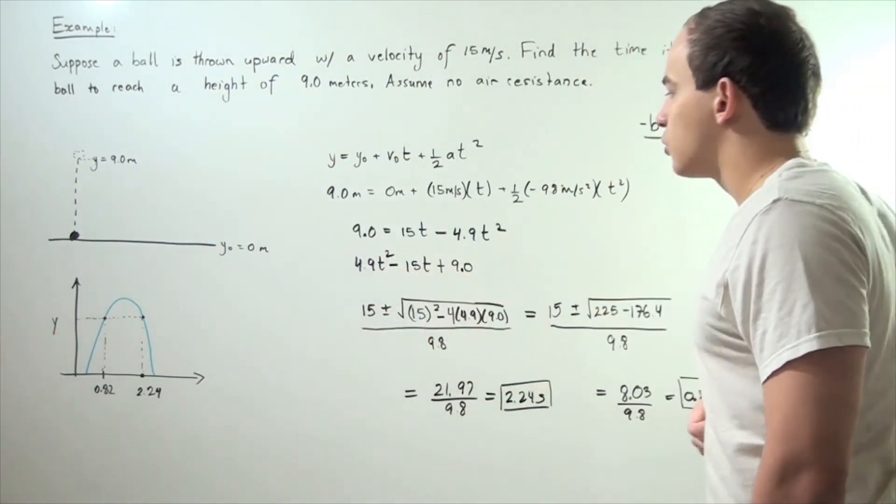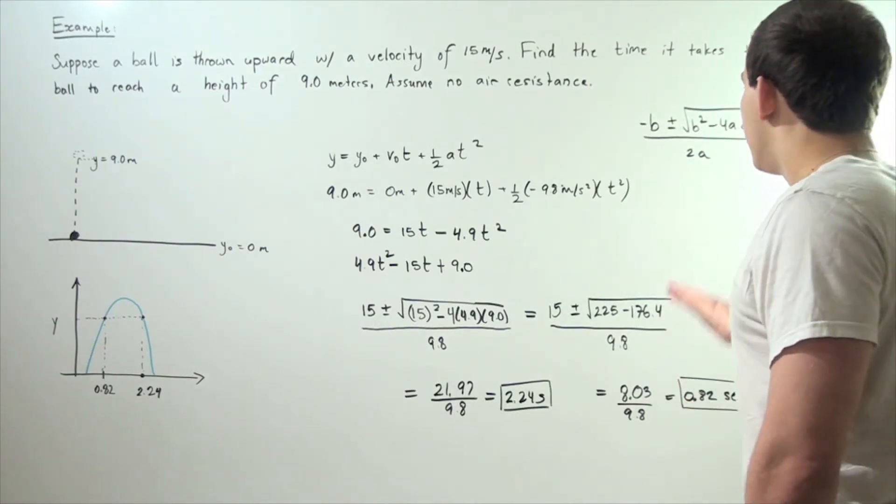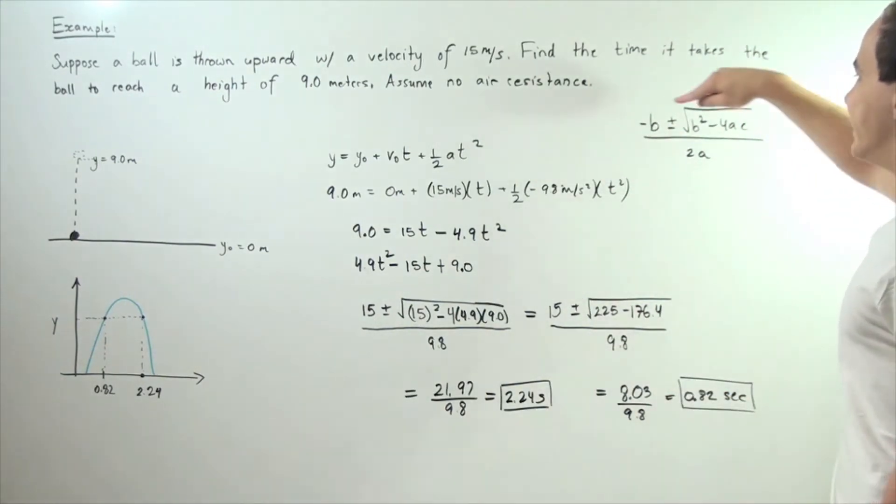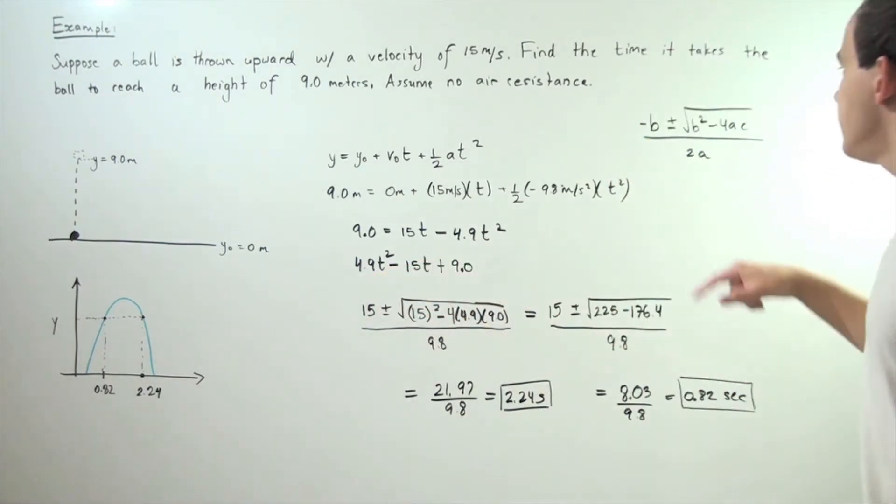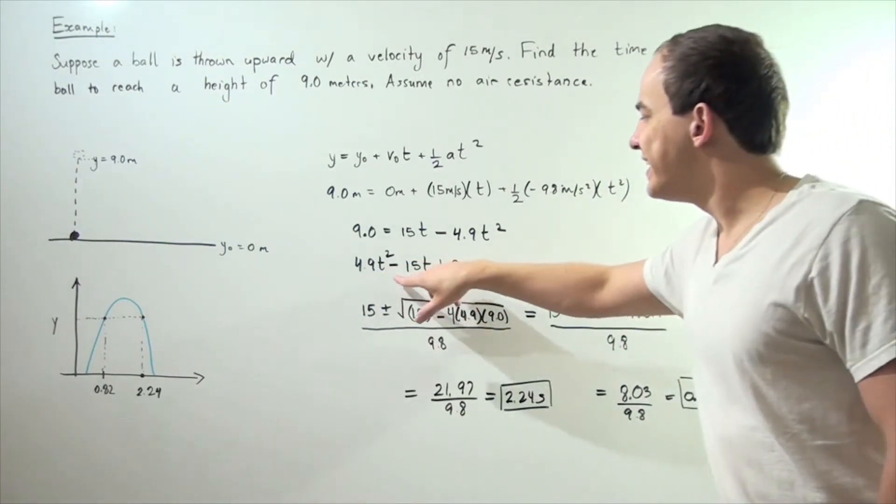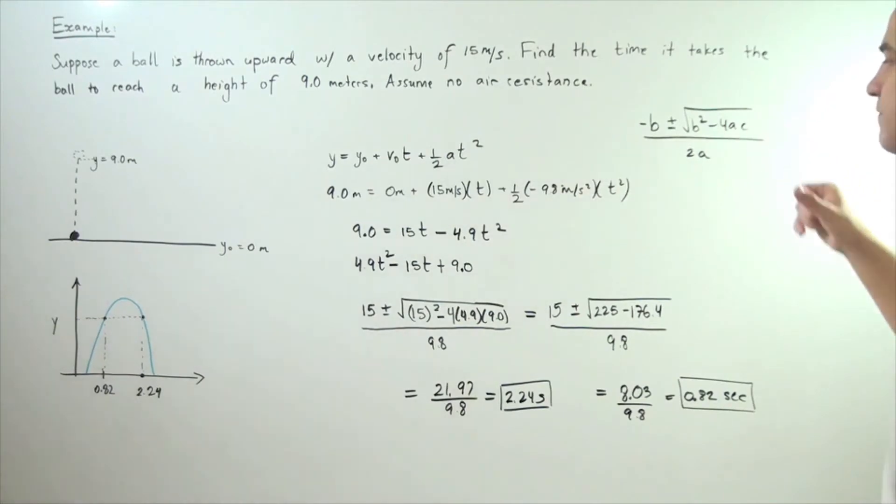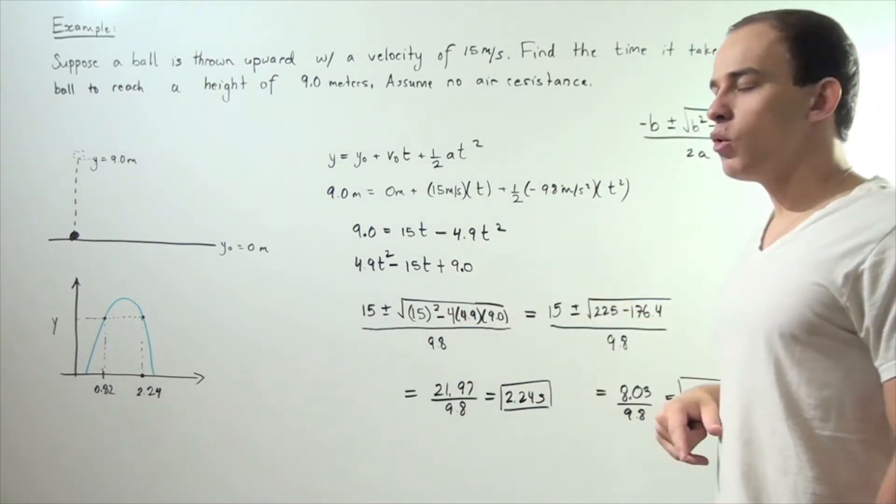In order to solve this quadratic equation, we have to use the quadratic formula shown here: negative b plus minus radical b squared minus 4ac divided by 2a. Where our a value is this 4.9, our b value is negative 15, and our c value is positive 9.0.